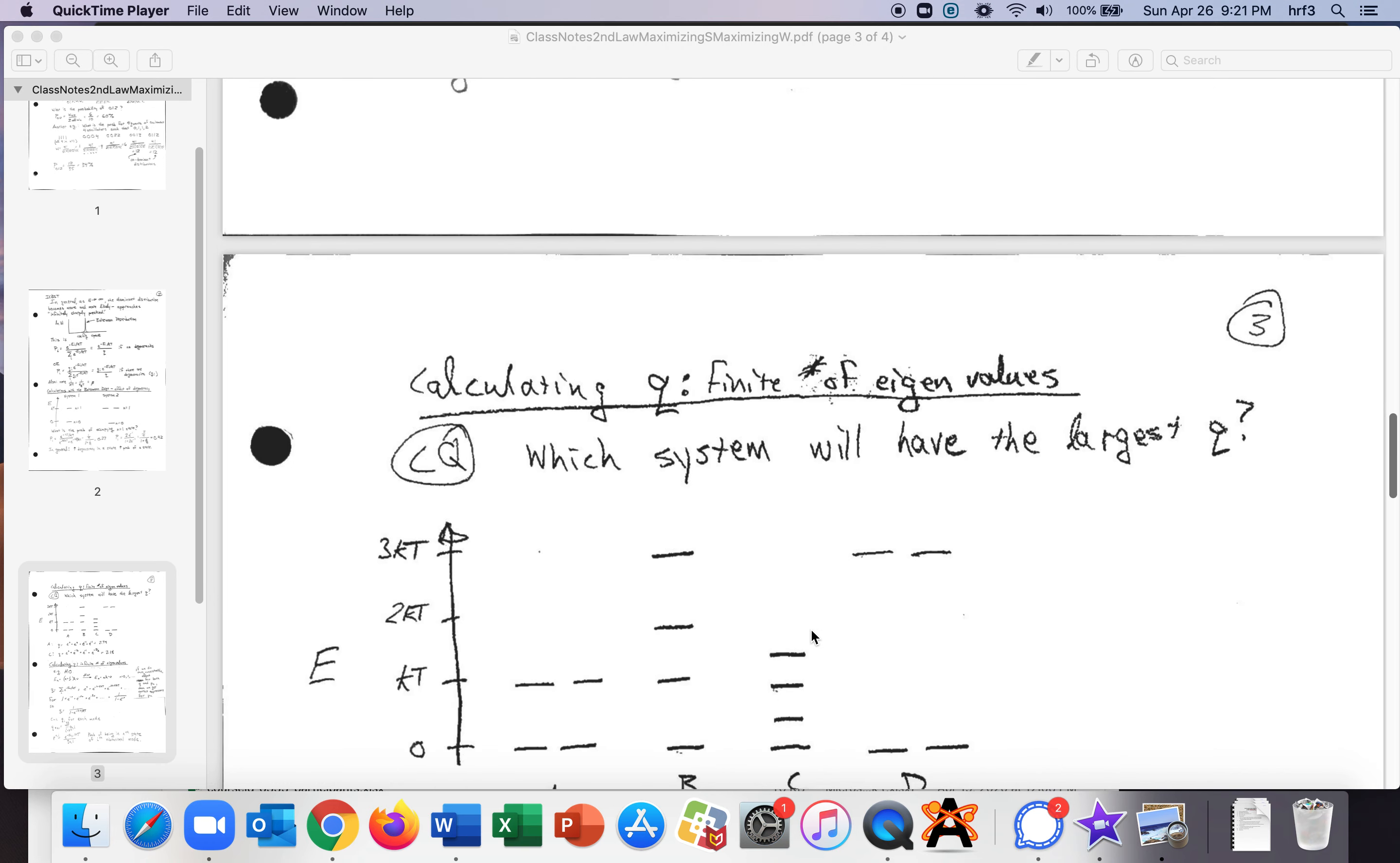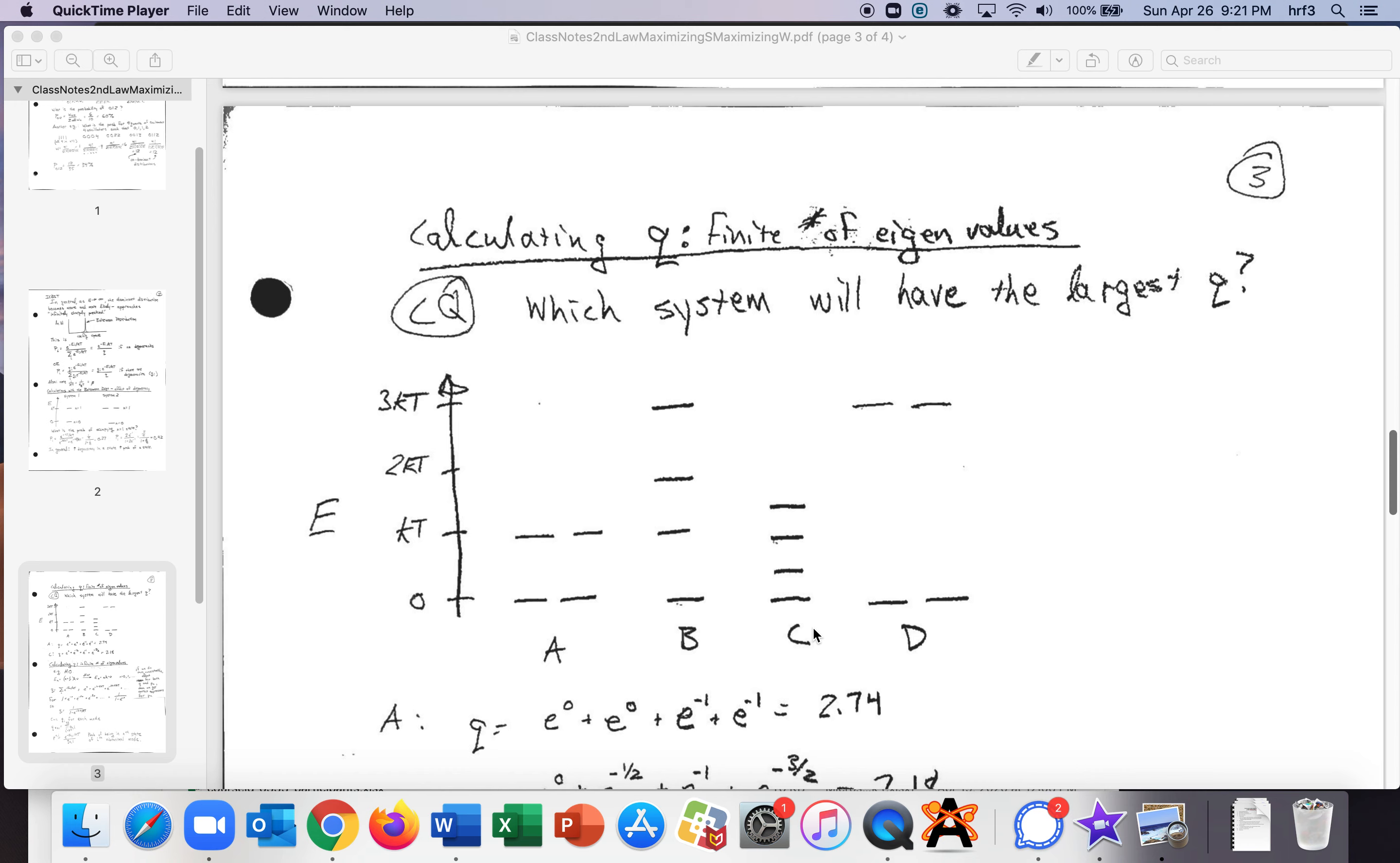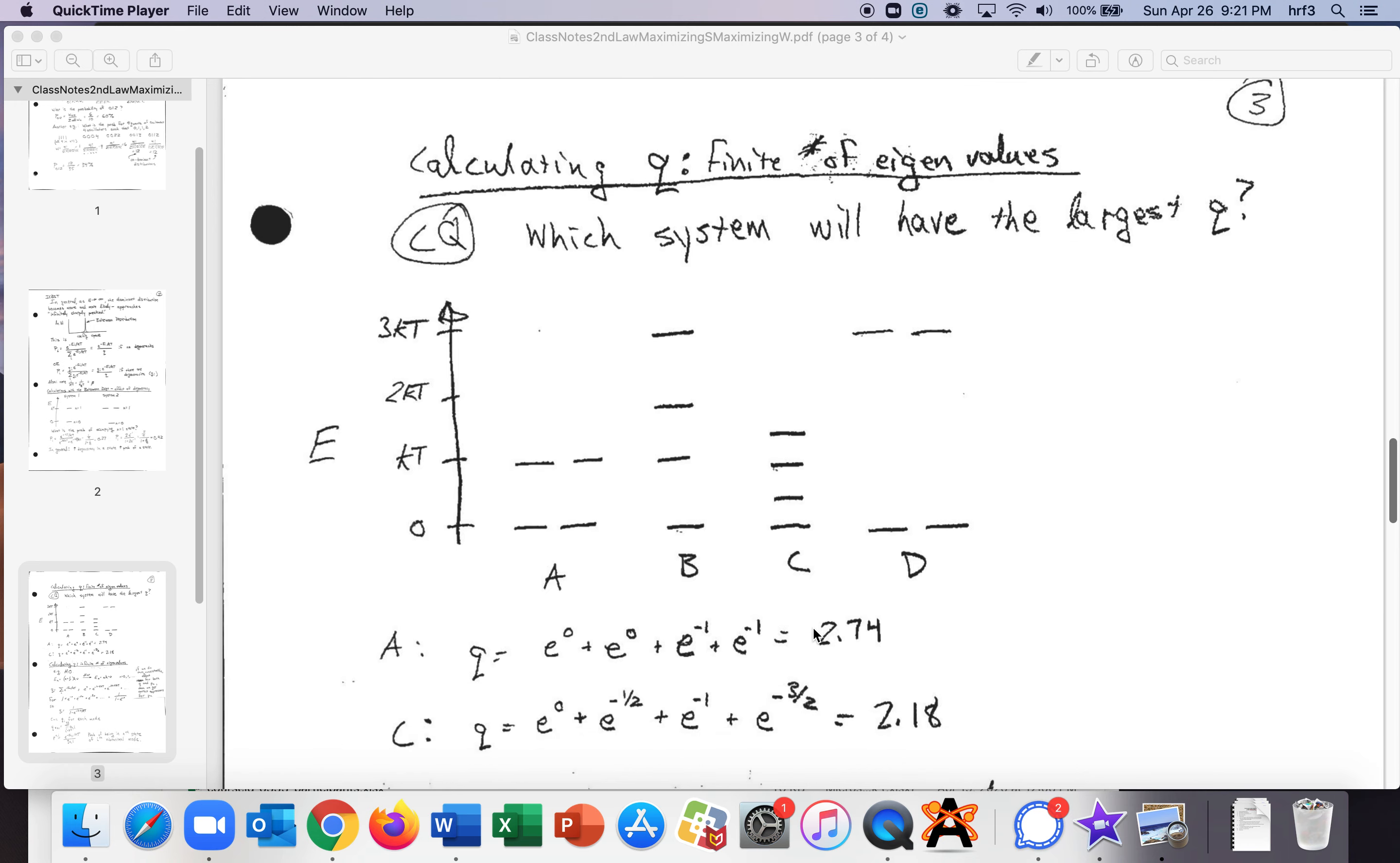All right because of the importance of q and how it connects to thermodynamics we should talk just a little bit about calculating q itself. So again that's always going to be the denominator it's kind of like your normalization constant sum over all the states. So here we have a system a b c and d and we want to figure out which one will have the largest q. So a has degeneracy in the ground state and the first excited state so the q is just the sum of all the states so here are the two ground states here's the two first excited states 2.74.